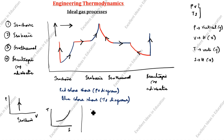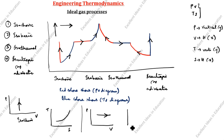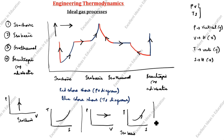For isobaric: the PV diagram comes straight with the arrow going this way. The TS diagram for isobaric is parabolic and goes up. These can be combined into one drawing — this is the trick.